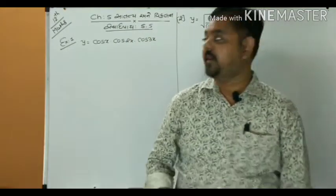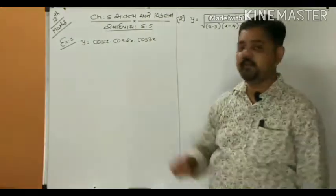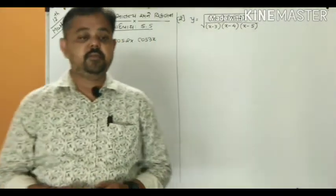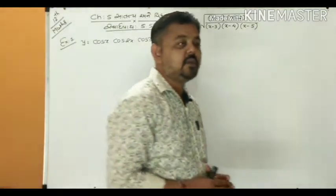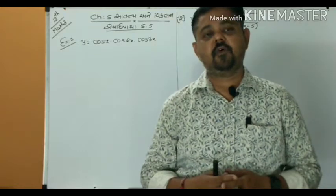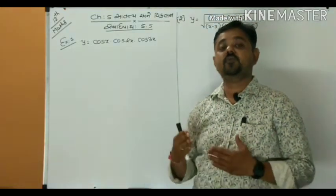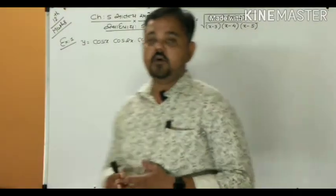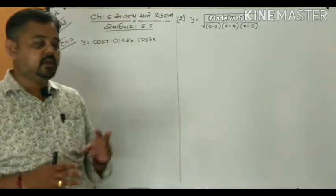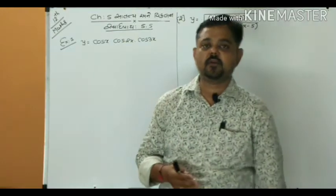Last lecture we completed exercise 5.4, and now we continue with exercise 5.5. There are many examples of functions in multiplication form, division form, or types like x raised to x, x raised to y, y raised to x. For this type of function, if two functions are in multiplication form, we apply the product rule.